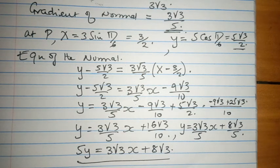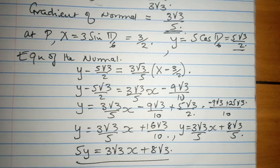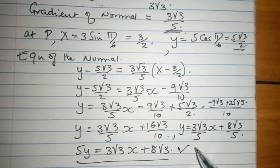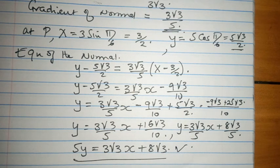Please note what we have done: we followed the normal procedure of the product of two perpendicular gradients being negative 1, and we followed the standard way of finding the equation of a straight line using the change in y over change in x as the gradient. We have been able to find the equation of the normal. Subscribe to my YouTube channel, let us work together, and share widely.